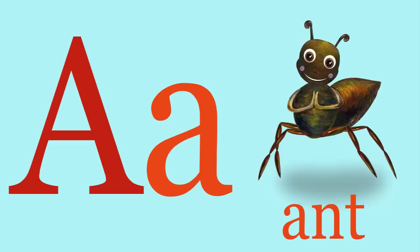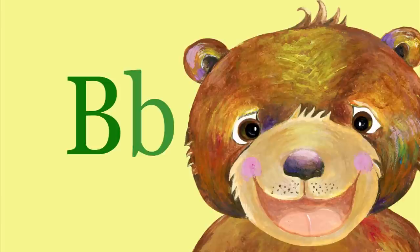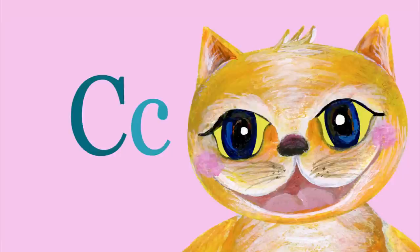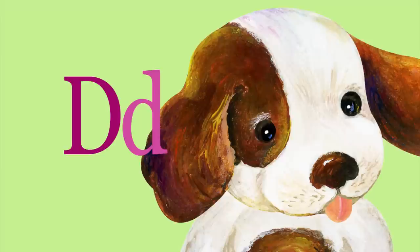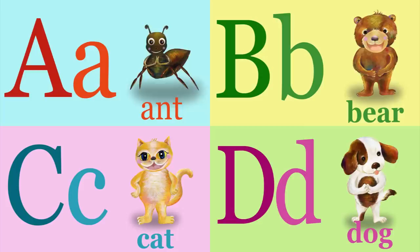Let's sing ABC Phonics Song! A is for ant, a-a-a-ant. B is for bear, b-b-b-bear. C is for cat, c-c-c-cat. D is for dog, d-d-d-dog.